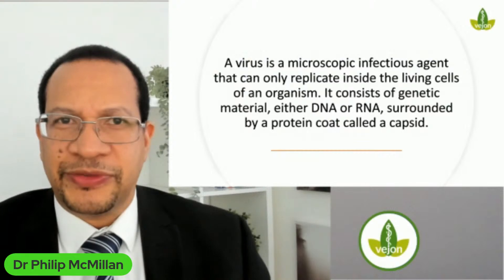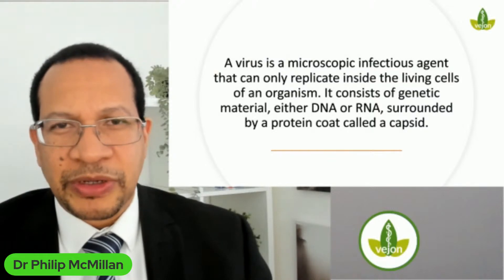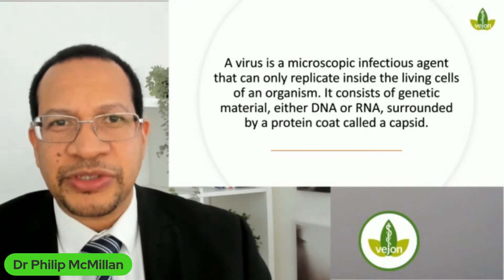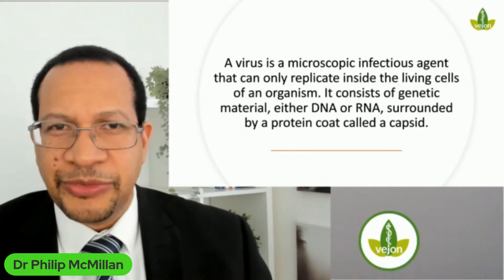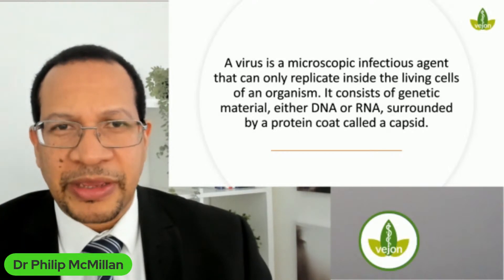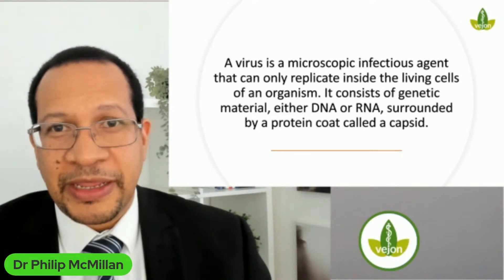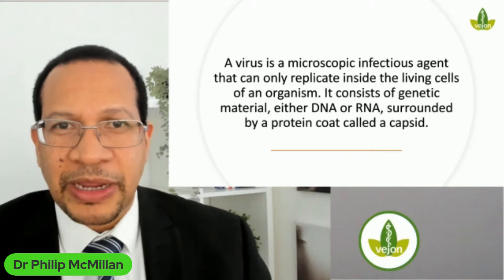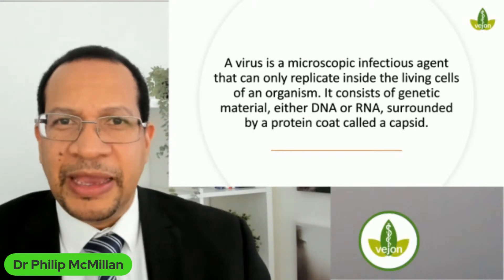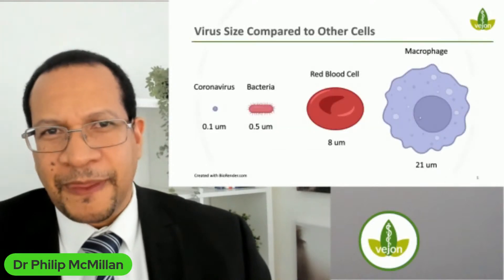A virus is a microscopic infectious agent — you can only see it on an electron microscope, not under a normal microscope — and it can only replicate inside the living cells of an organism. This is different from bacteria, which can replicate outside of the cell and grow on their own on an agar plate. A virus must be inside a living cell. It can contain genetic material that is either DNA or RNA, and it's surrounded by a protein coat called a capsid.